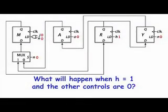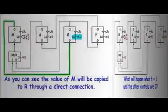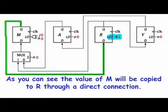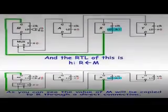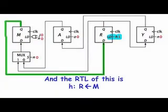What will happen when H is equal to 1 and the other controls are 0? As you can see, the value of M will be copied to R through a direct connection. And the RTL of this is if H, M will be copied to R.